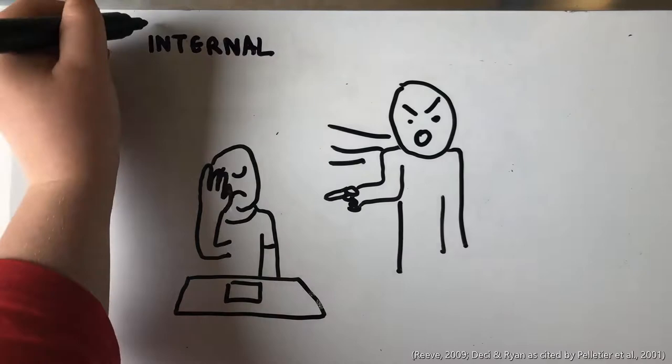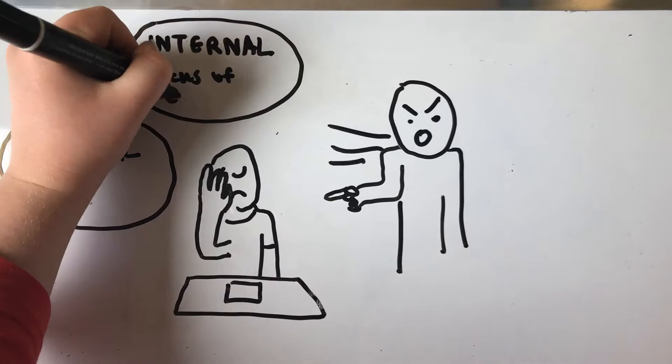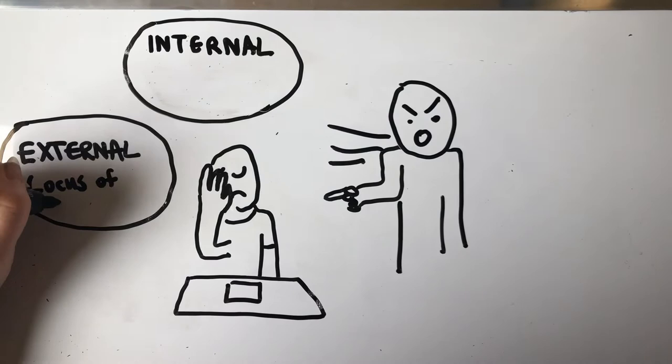If someone attempts to coerce or press you into behaving in a certain way, this is called a controlling motivational style. According to cognitive evaluation theory, these instances are disruptions to an individual's locus of causality which makes you feel that you are not responsible for your actions and thus stunts motivation.